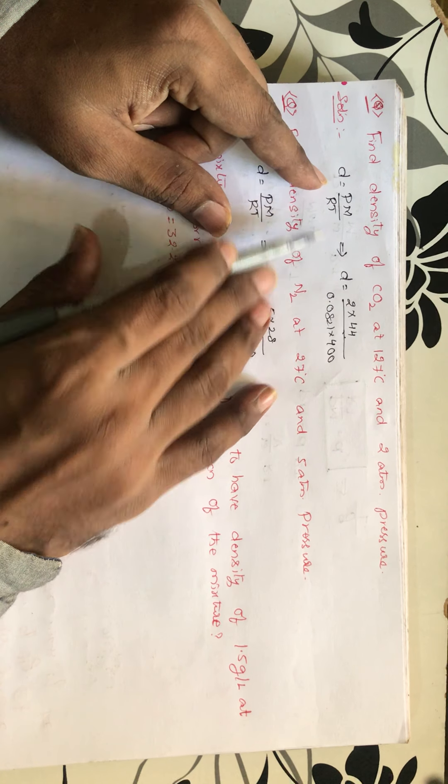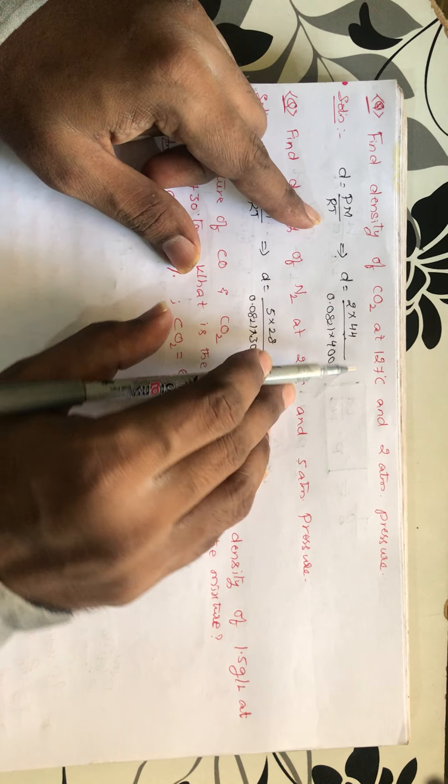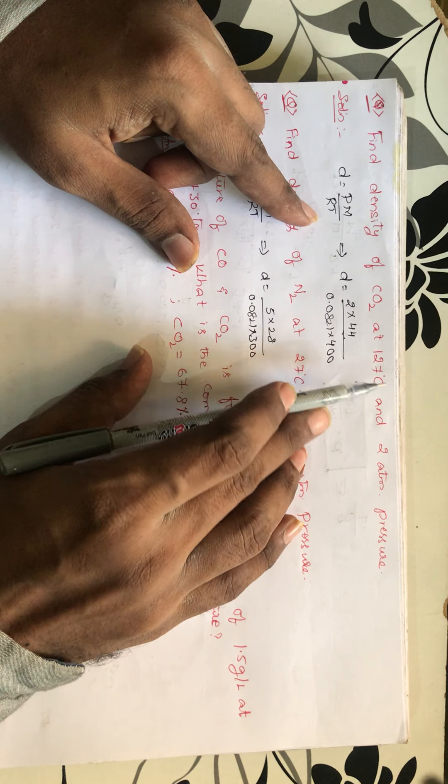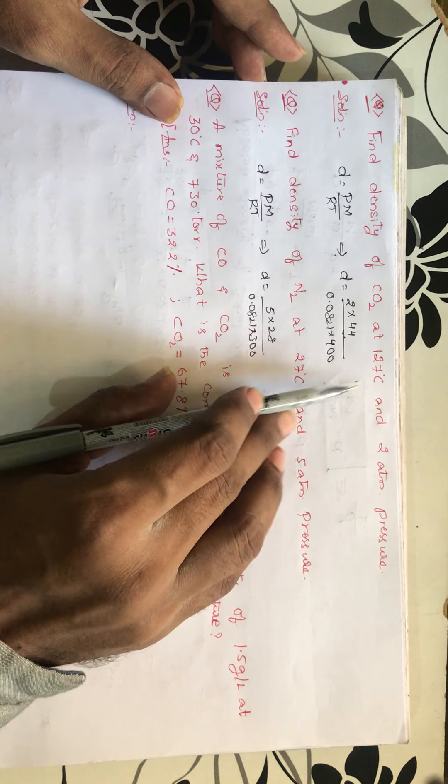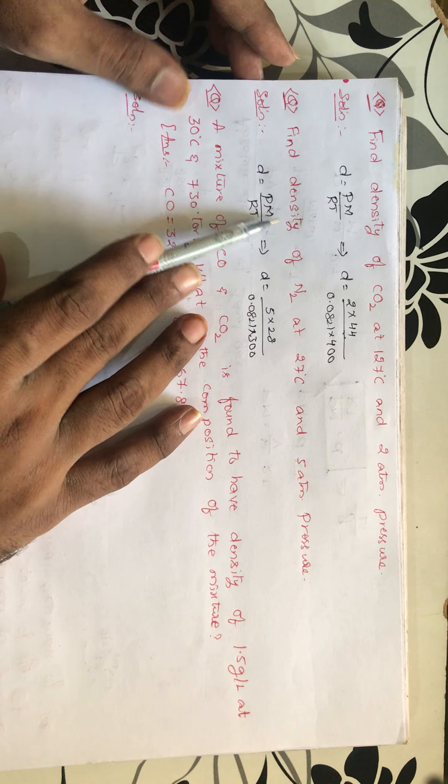R is 0.0821. And temperature he has mentioned 127 degrees centigrade. So 127 degrees centigrade plus 273 gives you 400 Kelvin. So if you calculate this, you will be getting the answer. In the same way, try this one students.